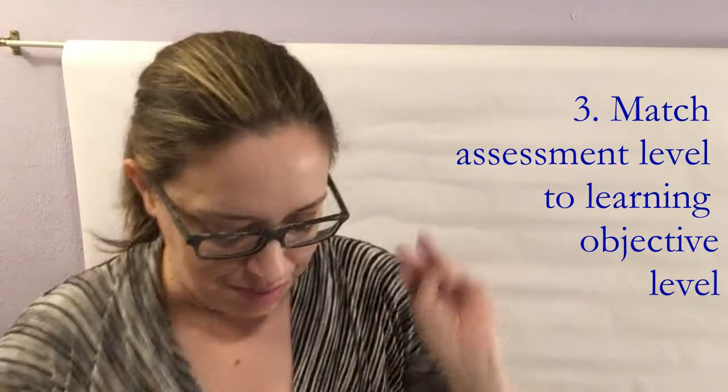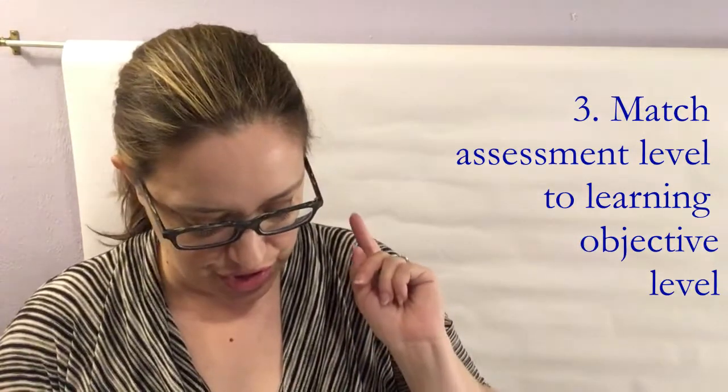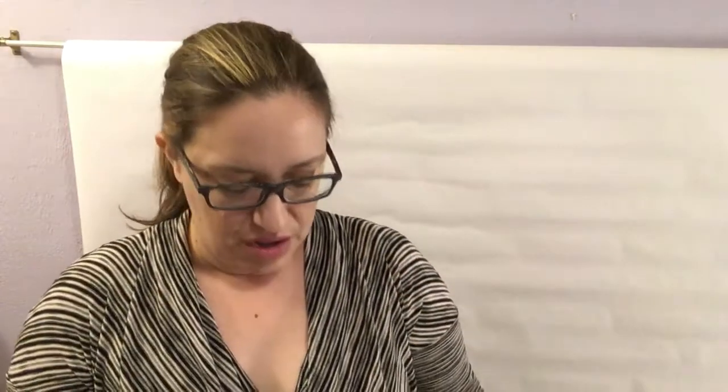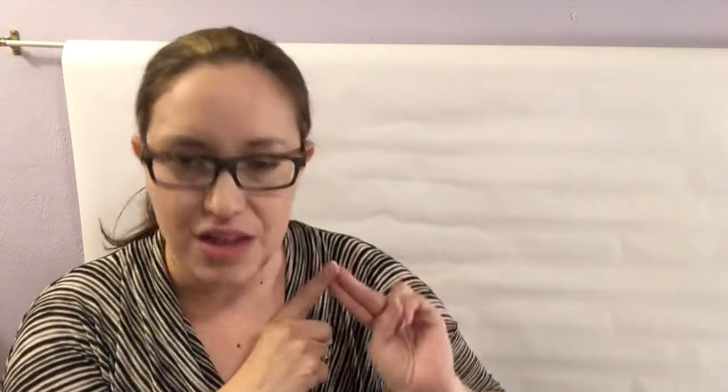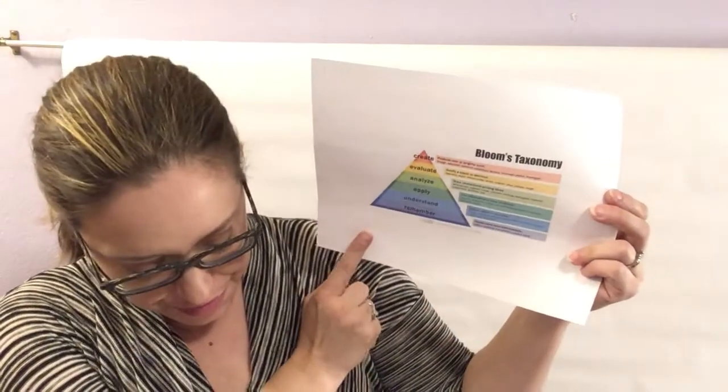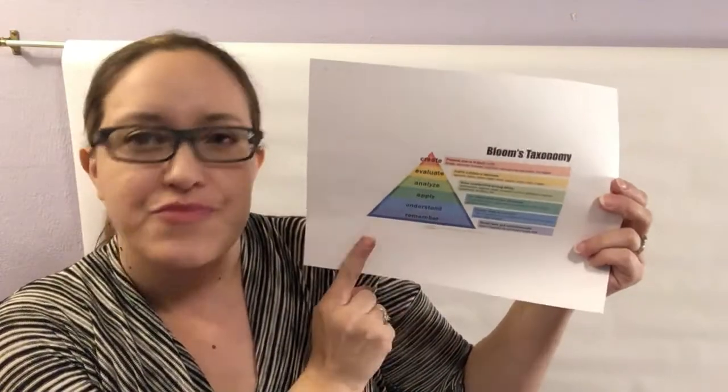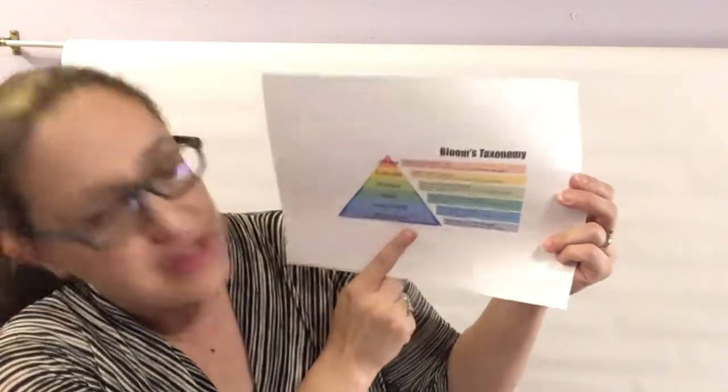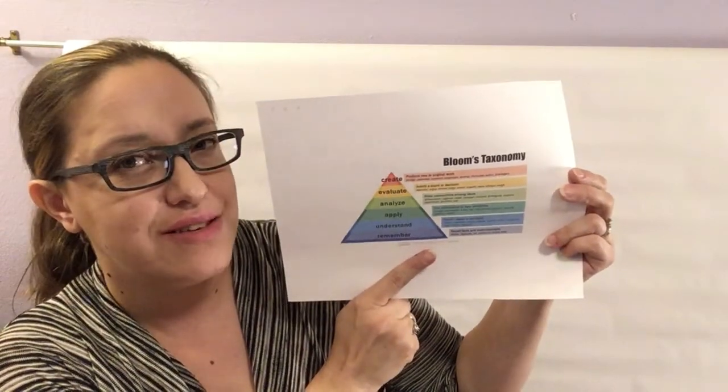Once we have that, then number 3, match assessment level to learning objective level. So let's go back to our learning objectives. 1. Define ASMR, 2. List common visual and auditory ASMR triggers. Those two outcomes are at the remember level, so pretty low level of learning. We can assess this with a short answer test that asks students to recall information that they've learned.